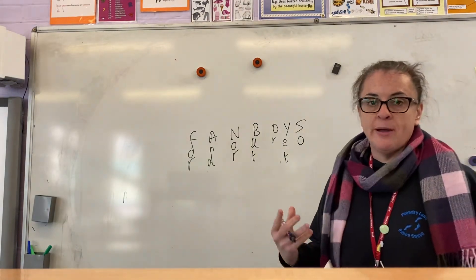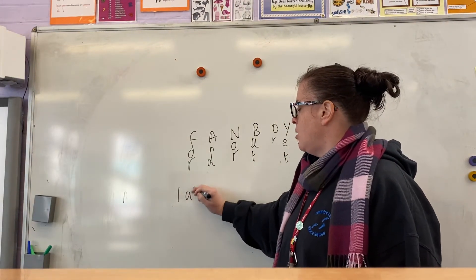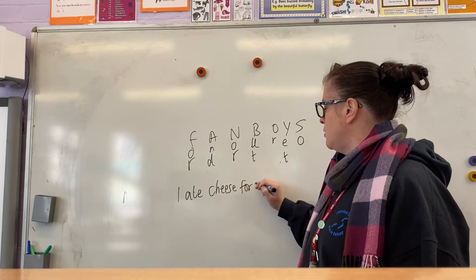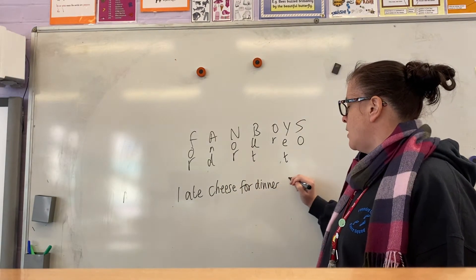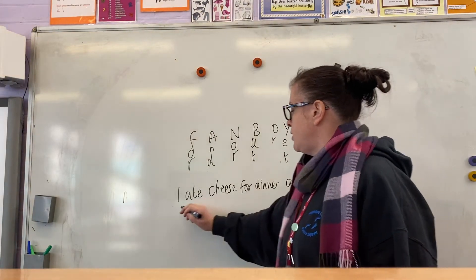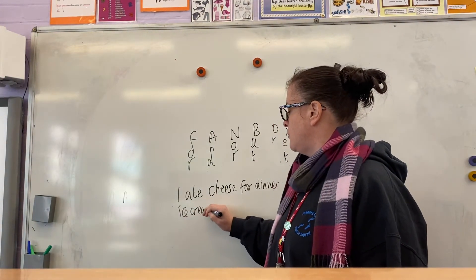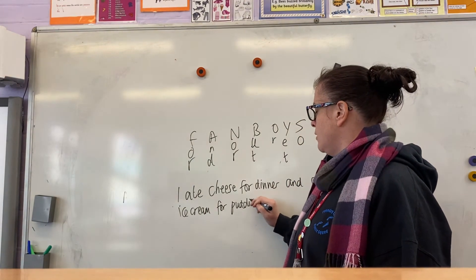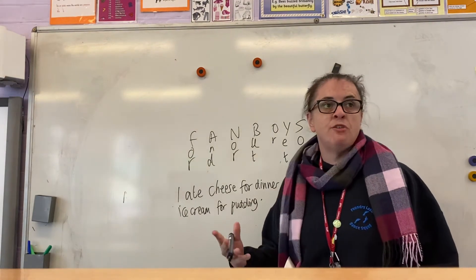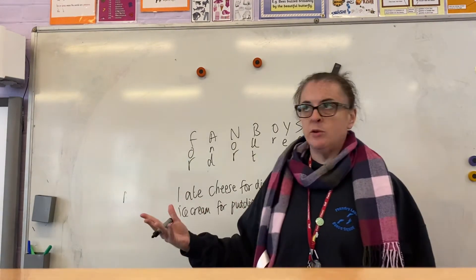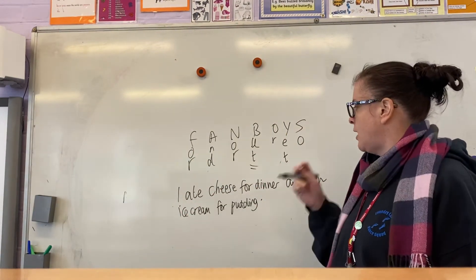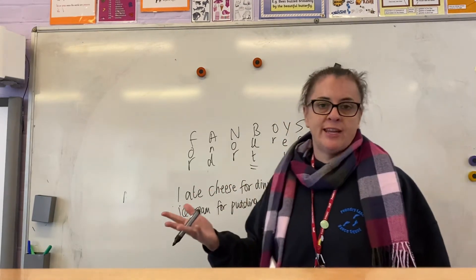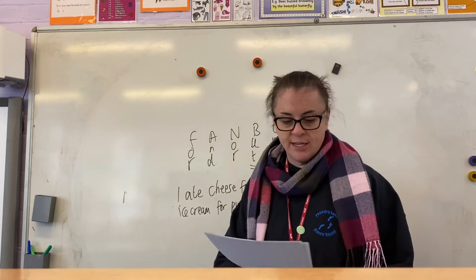Coordinating conjunctions create a compound sentence. So an example would be: I ate cheese for dinner and ice cream for pudding. I like cheese and crackers but have to have pickle with them — that would use 'but'. I went outside, yet it was raining. Coordinating conjunctions.